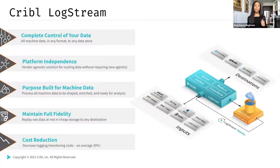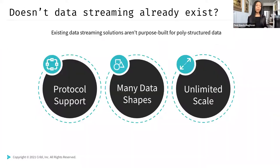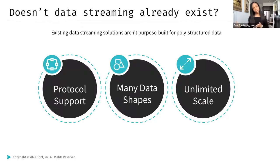Cribble Logstream significantly decreases an organization's logging and monitoring costs. We see our customers save about 30% of infrastructure costs on average. One question that might pop up is: isn't this just Kafka? Yes, data streaming already exists, but existing solutions are not purpose-built for poly-structured data. An observability pipeline like Cribble Logstream is purpose-built to work with even the most complicated data formats.